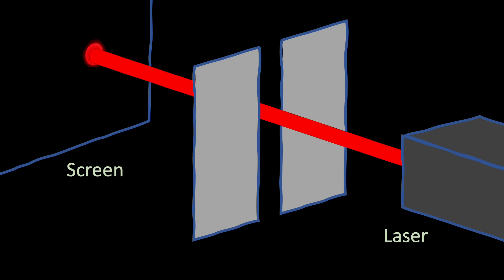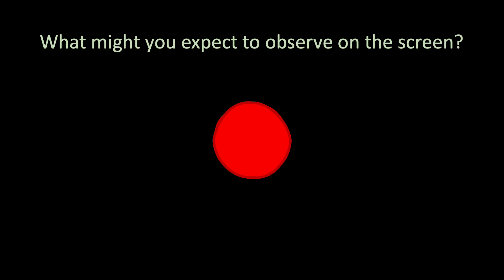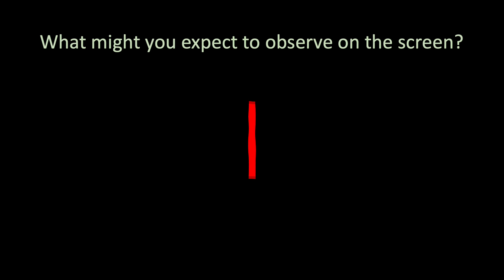But what happens if you make the gap narrower, so that it blocks out part of the beam itself? If you think about it, as the gap gets narrower, it will cut off more and more of the light, eating into the sides of the beam. So what might you expect to observe on the screen itself? Well, you would probably expect that as the gap gets narrower, you simply see a thinner and thinner slice of the beam on the screen. And if you continue doing this, eventually, the light is completely blocked out.